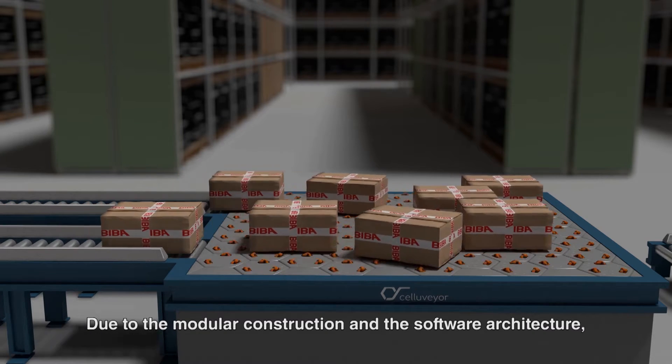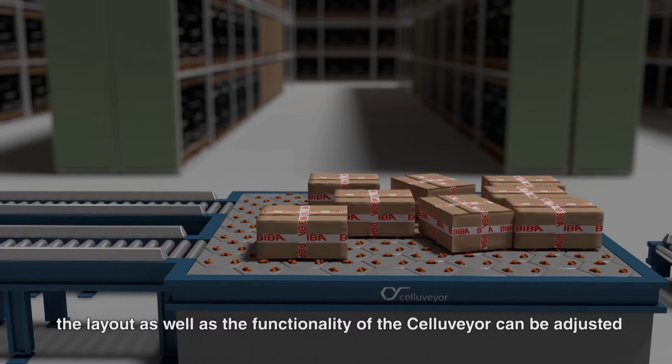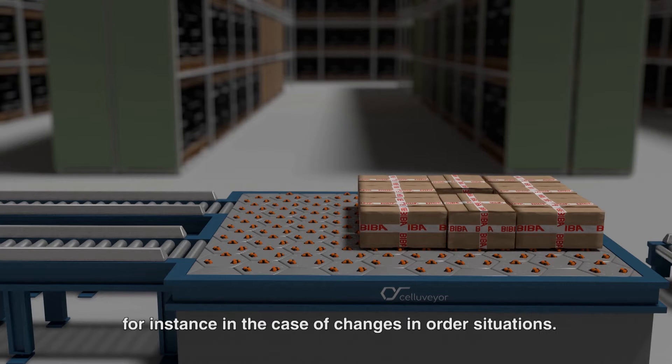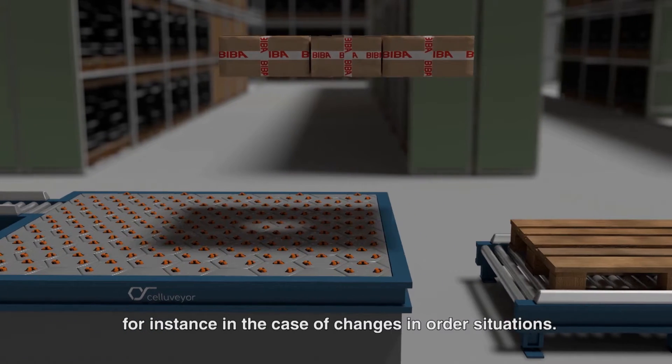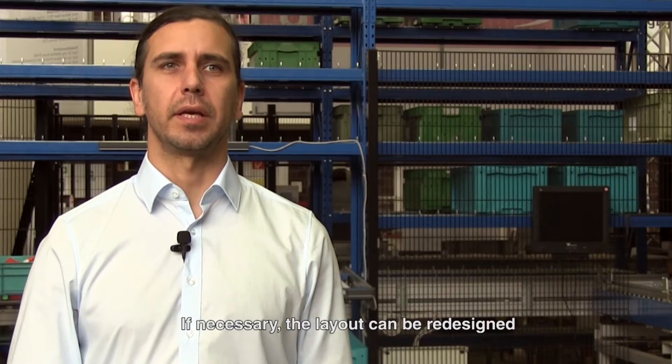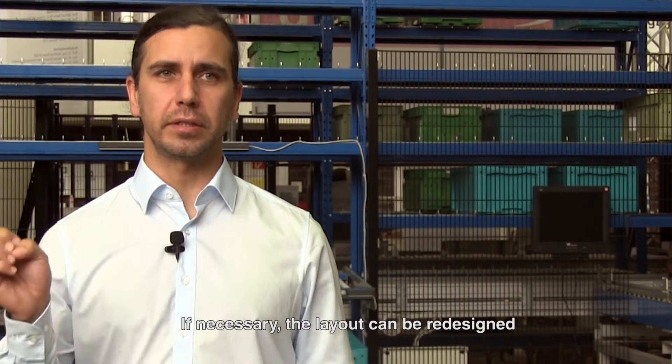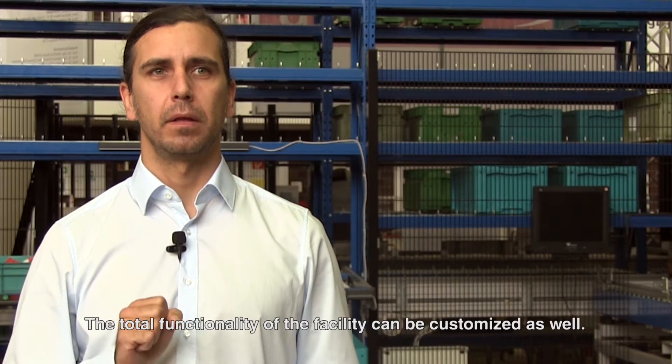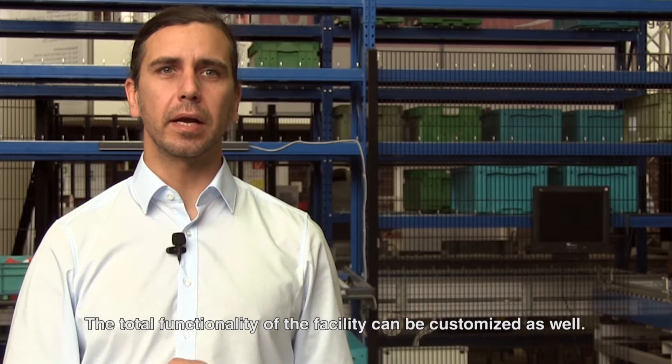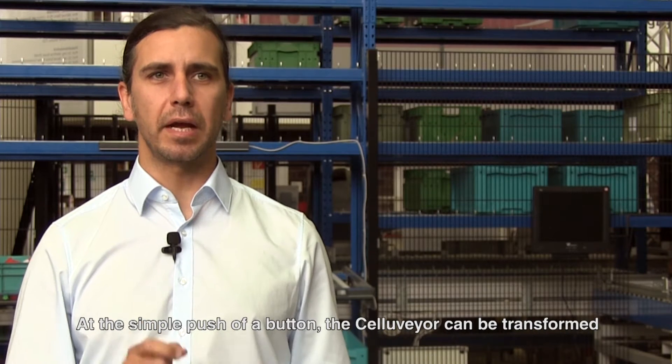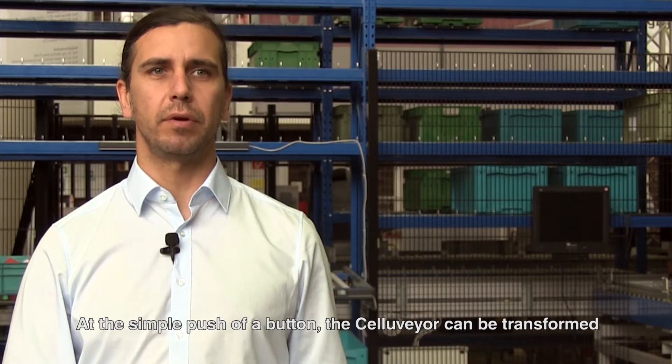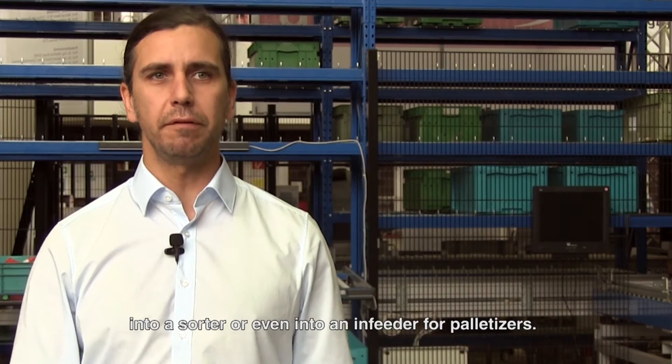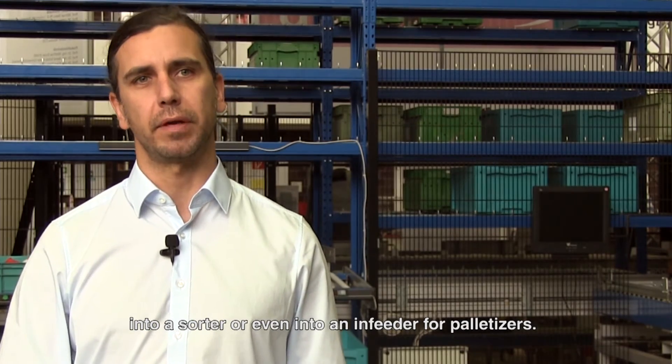Through the modular design and software architecture, the layout as well as the functionality of the Celluvayer can be adjusted to customer requirements, for example when order situations change. The layout of the installation can be redesigned by adding, removing, or recombining cells. The overall functionality can also be adjusted at the push of a button. Via a simple software update, the Celluvayer can be converted from a conveyor with diverter to a sorter and even to an in-feeder for automatic palletizing systems.